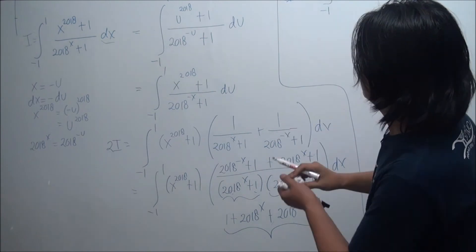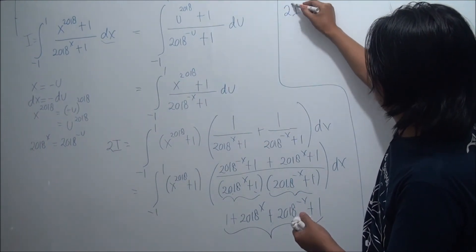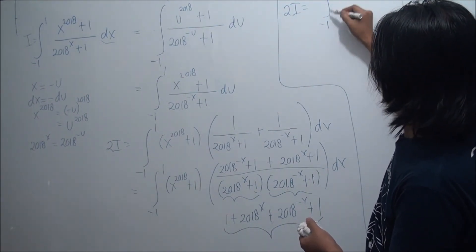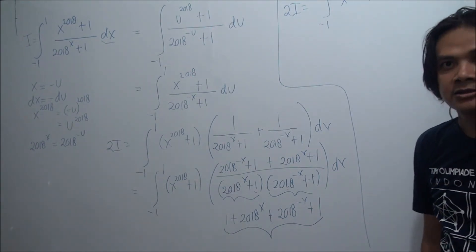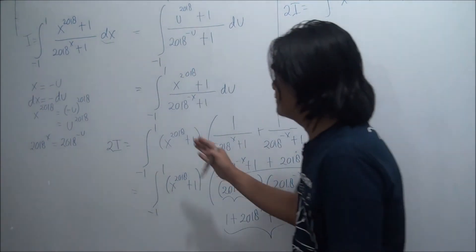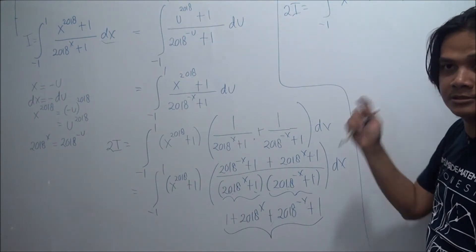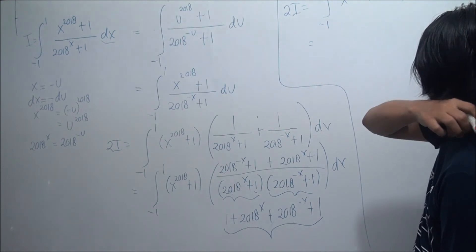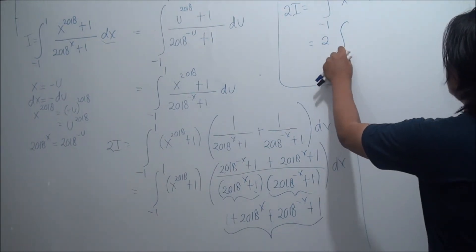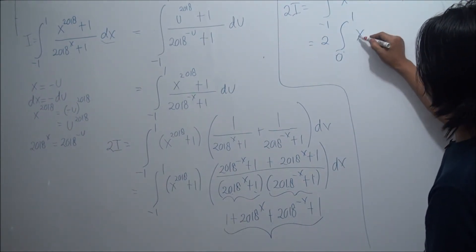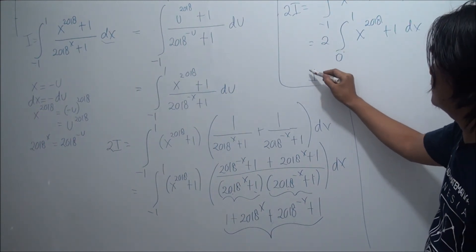Therefore, 2I simplifies to the integral from negative 1 to 1 of x to the power of 2018 plus 1, dx. We managed to simplify this messy integral into something much simpler. Since x to the power of 2018 and 1 are both even functions, we have 2I equals twice the integral from 0 to 1 of x to the power of 2018 plus 1, dx. Canceling the 2, we get I equals the integral from 0 to 1 of x to the power of 2018 plus 1, dx.